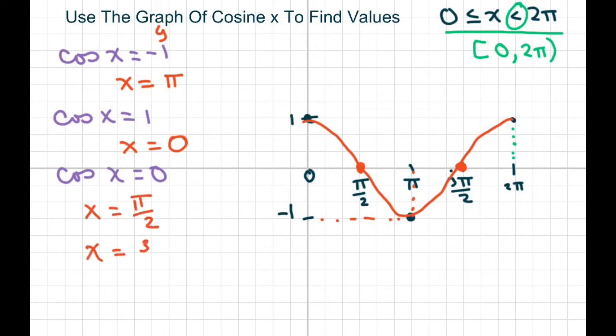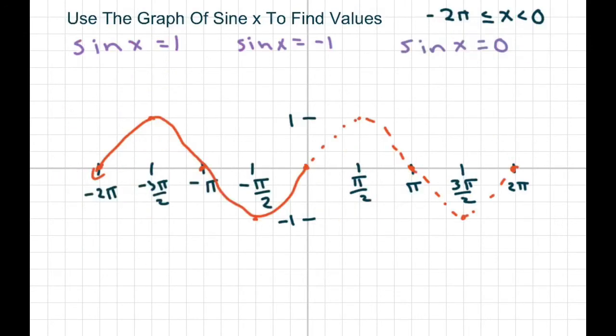Okay, the next one is sine. For sine, they want you to find values from negative 2π to 0, so we include negative 2π but not 0. Therefore, we're only working on the left side of the graph.